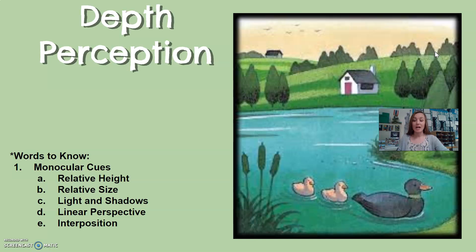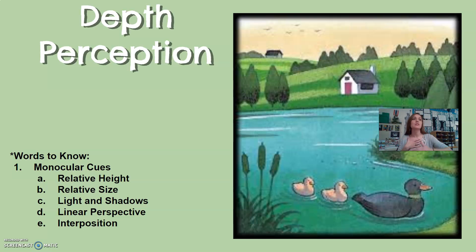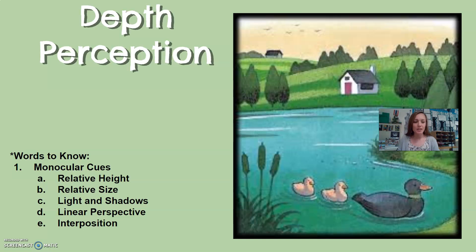Let's talk about another way to understand depth called monocular cues. You can still tell depth even if you only had one eye and weren't using both. You can still tell how far away an object is using monocular — one eye — cues. Some of these monocular cues are listed below, and I'll go over those briefly.